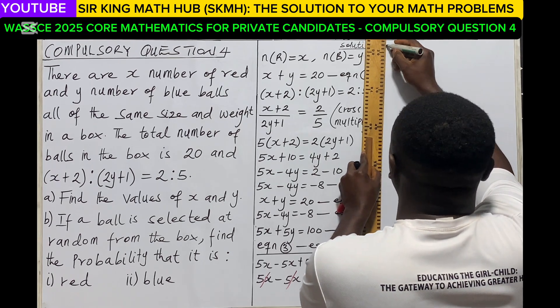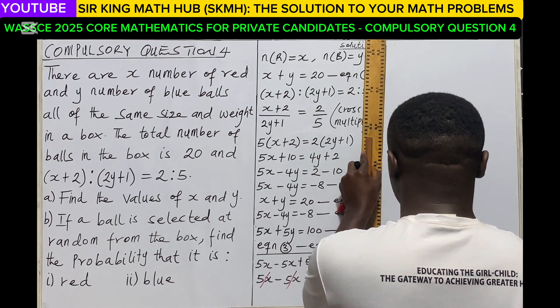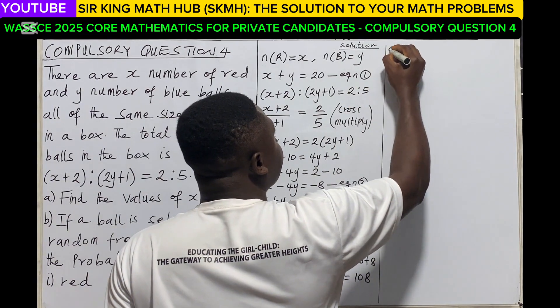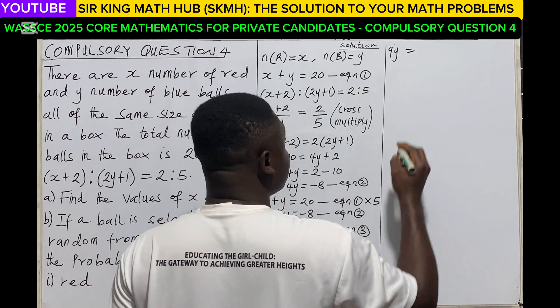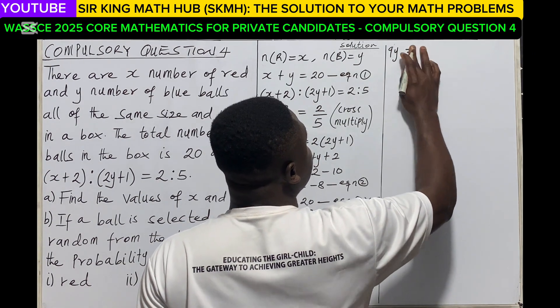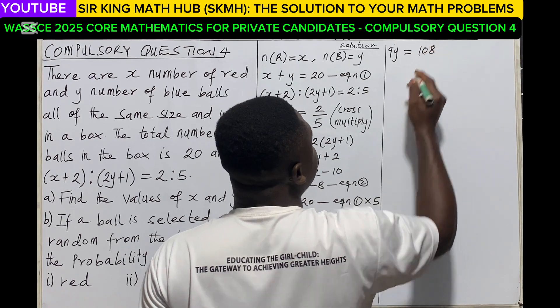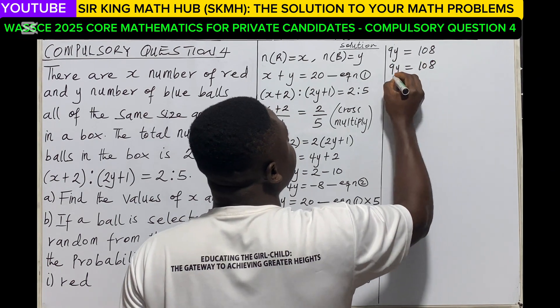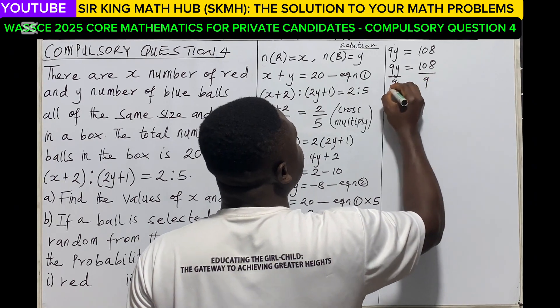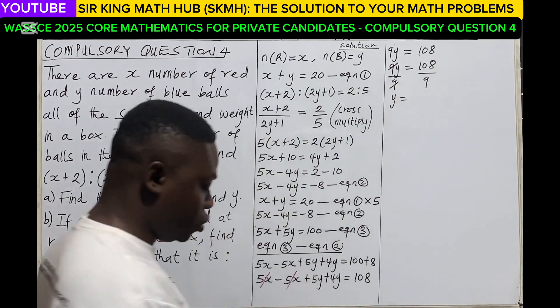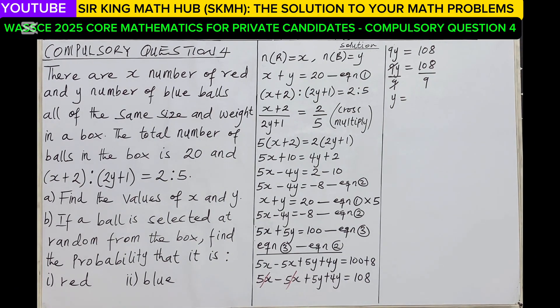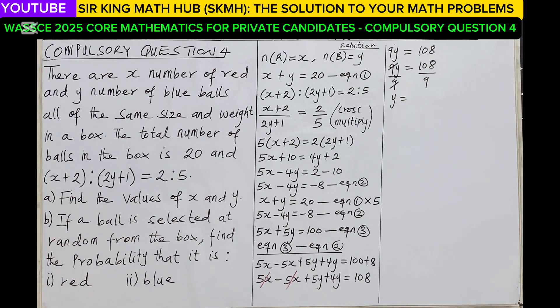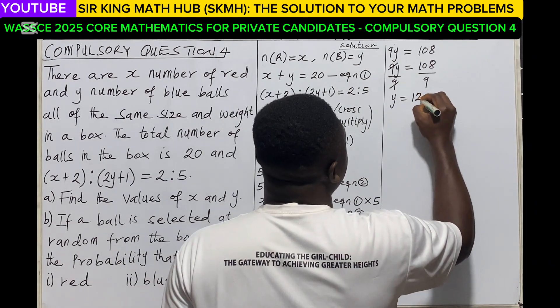5x and minus 5x cancel out. So 5y plus 4y, that is 9y, and this must be equal to 108. We are looking for y, so we can divide both sides by 9. So the 9 will cancel out. 108 divided by 9 is 12. So we have y is equal to 12.